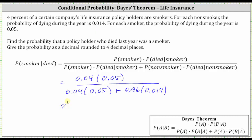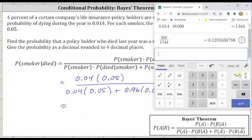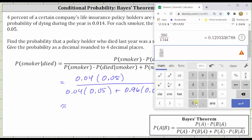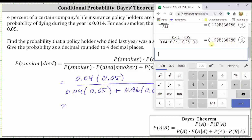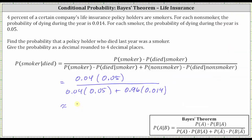Now we'll go back to the calculator, and of course we should get the same result of 0.1295. Using the fraction format key, we have 0.04 times 0.05 in the numerator. In the denominator, we have 0.04 times 0.05 again, plus 0.96 times 0.014. And we do get the same result to four decimal places: 0.1295. So whether we use a table to organize the information or go directly to Bayes' theorem, the result is the same. I hope you found this helpful.